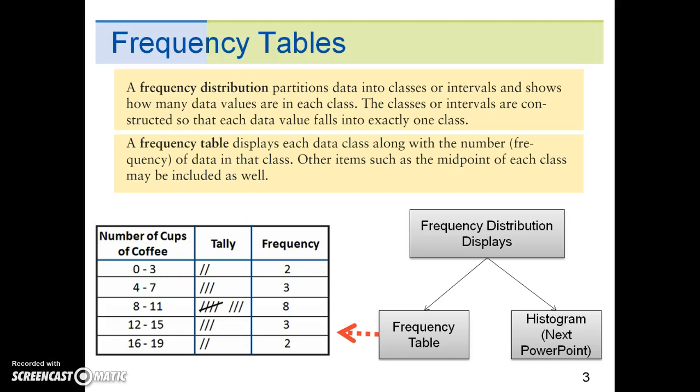For example, starting with the first row, two people drink zero to three cups of coffee per week. In the second row, three people drink four to seven cups of coffee per week, and so on for the rest of the table.